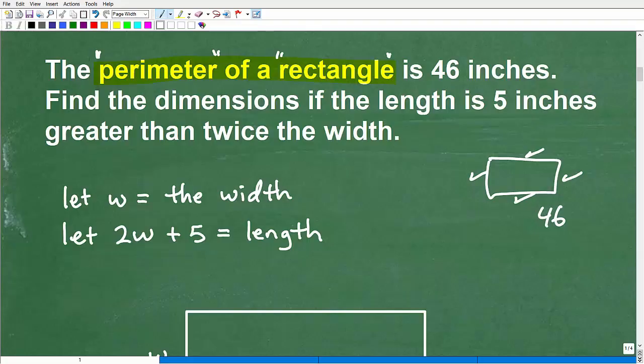Let's continue to read and reread this problem so we're crystal clear on what it's asking. The perimeter of a rectangle is 46. If I add up all these sides, it's 46 inches. Now we want to find the dimensions. I want to find the length and width. That's the dimensions of this particular rectangle.